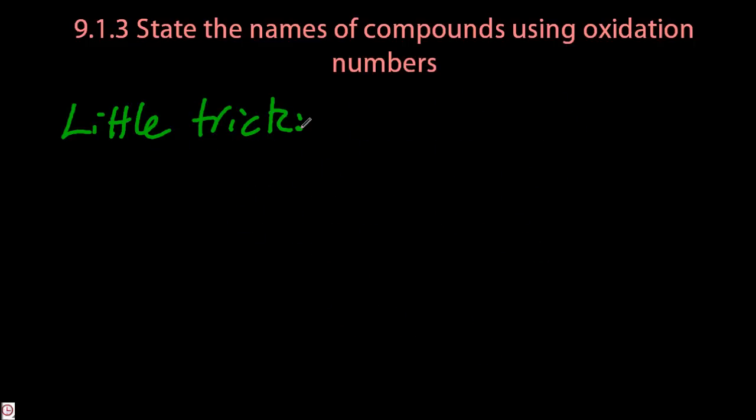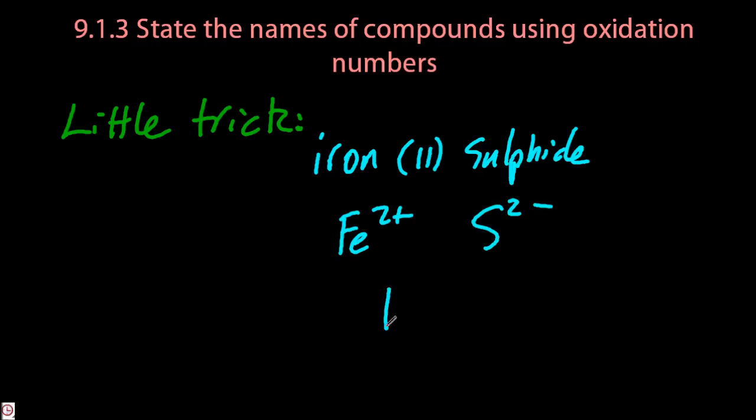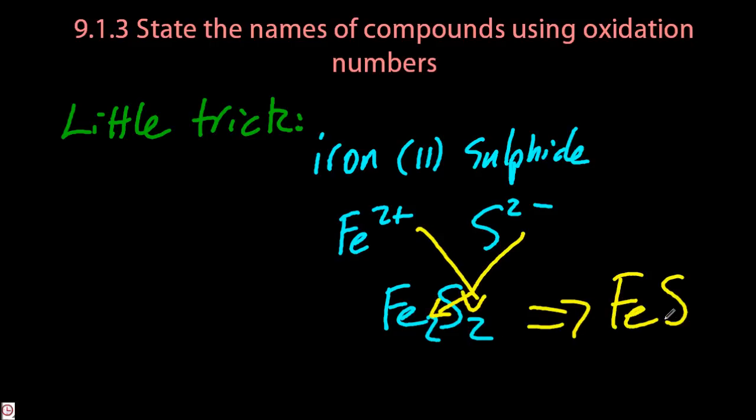There's one little twist to this. For example, iron(II) sulfide. Iron's 2+, it says 2 in the middle, and sulfur's 2- as sulfide. Fe2S2, using the crossover method, but all ionic compounds have to be empirical formulae. So I'm going to cancel those down to FeS.